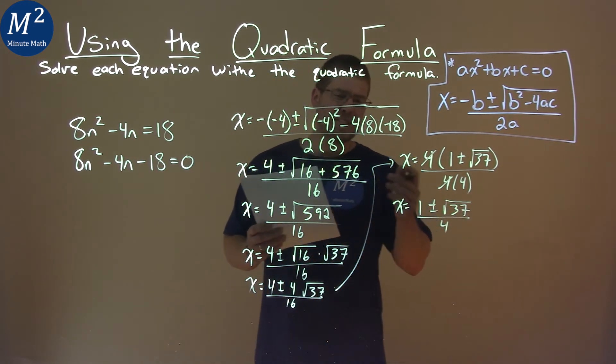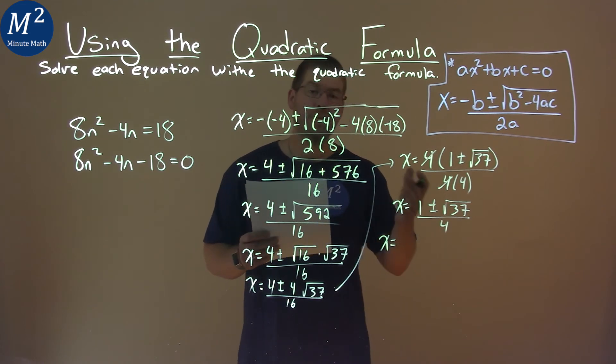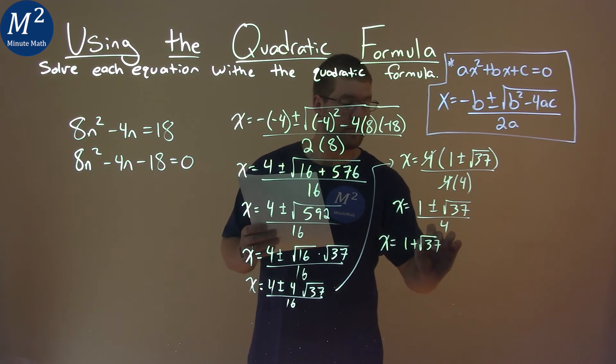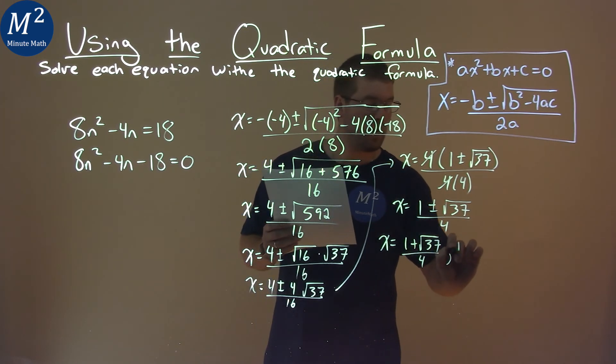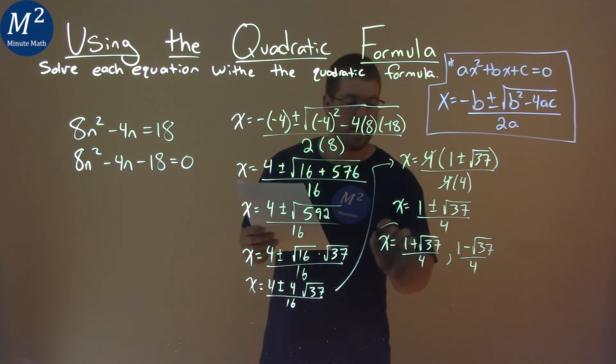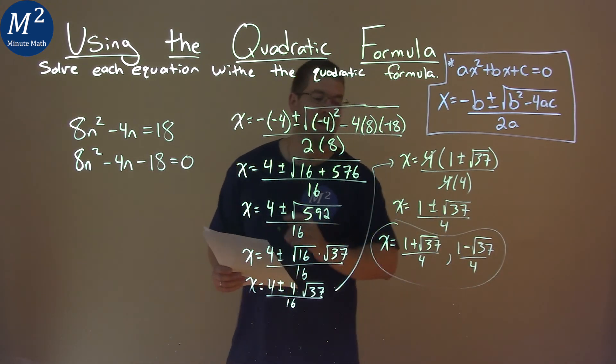Now we're pretty much done. We can write this as two individual statements: x equals 1 plus the square root of 37 over 4, and 1 minus the square root of 37 over 4. And those two are our final answer.